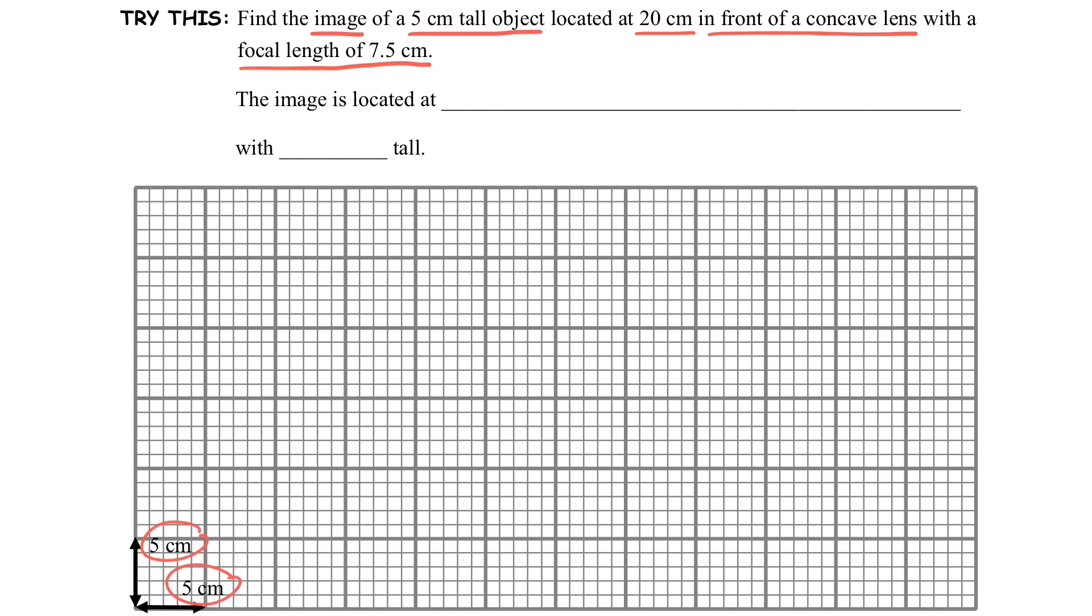So firstly, we will take a look on the graph paper and make sure we will be very careful about the scale. And firstly, we will draw the axis and the concave lens.